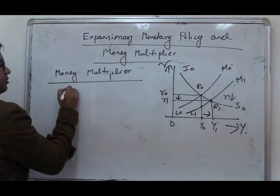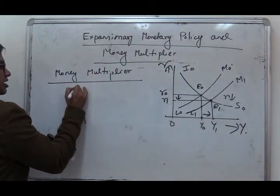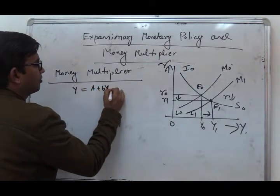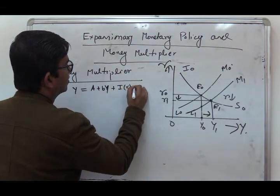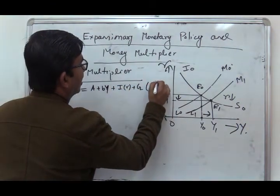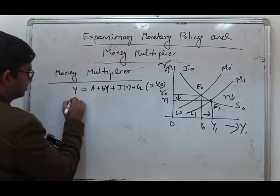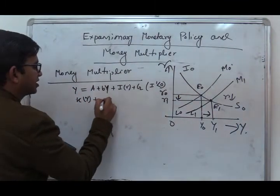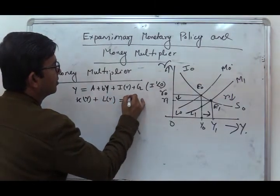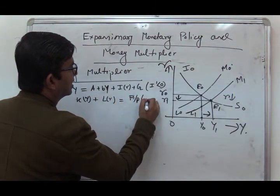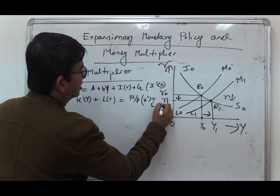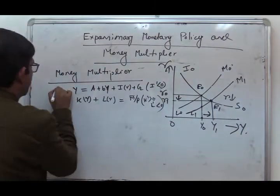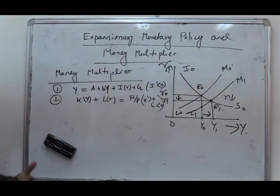Let us consider the equilibrium conditions in the commodity and money market. The commodity market equilibrium condition is: Y = A + BY + IR + G, where I' < 0. The money market condition is: KY + LR = M̄/P, where K' > 0 and L' < 0. These are equations 1 and 2, and we will differentiate both.